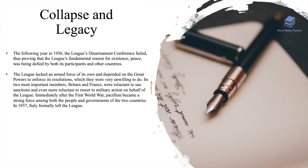When it comes to the collapse and legacy of the League itself: in 1936 the League's disarmament conference failed, proving that the League's fundamental reason for existence — peace — was defied by its participants. A key weakness was that the League lacked an armed force of its own and depended on the great powers to enforce resolutions, which they were very unwilling to do. Its two most important members, Britain and France, were reluctant to use sanctions and even more reluctant to resort to military action. Immediately after the First World War, pacifism became a strong force in both countries, and in 1937 Italy formally left the League.